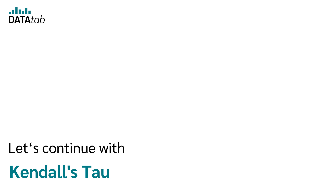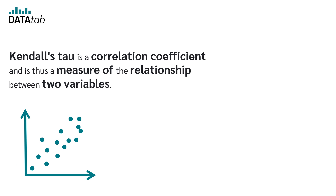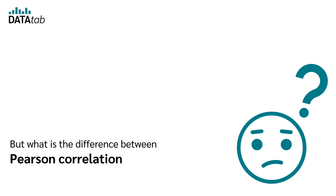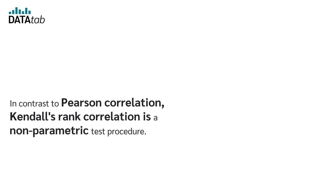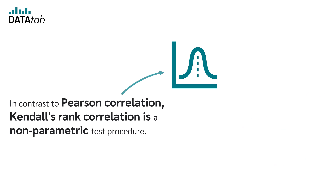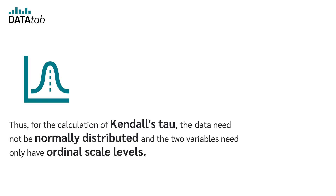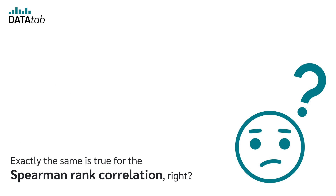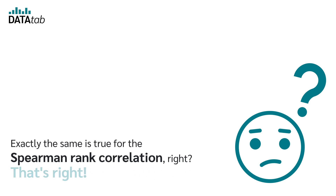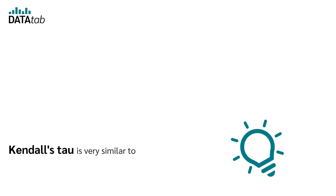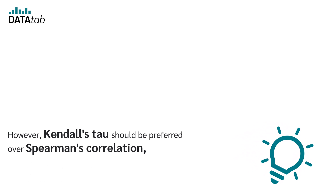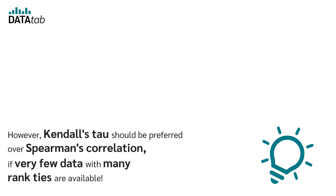Kendall's tau is a correlation coefficient that measures the relationship between two variables. In contrast to Pearson correlation, Kendall's rank correlation is a non-parametric test procedure, so the data need not be normally distributed and the variables need only have ordinal scale levels — the same is true for Spearman rank correlation. However, Kendall's tau should be preferred over Spearman's correlation when very few data points with many rank ties are available.